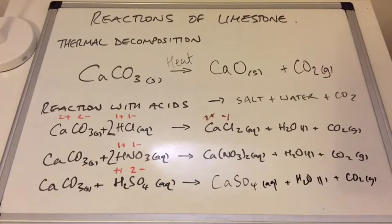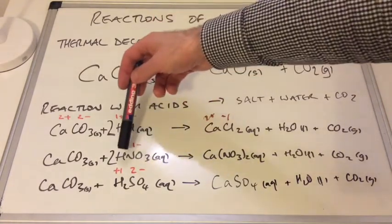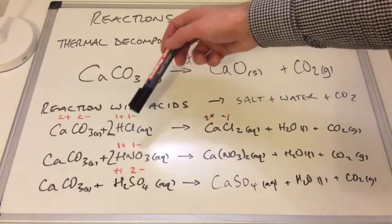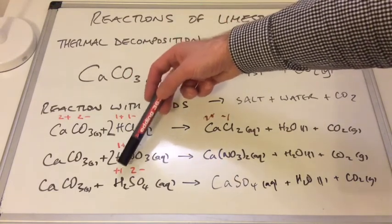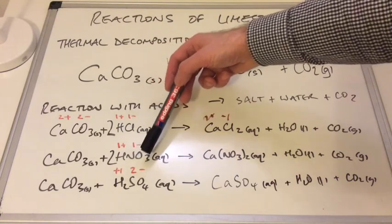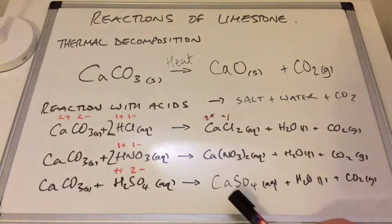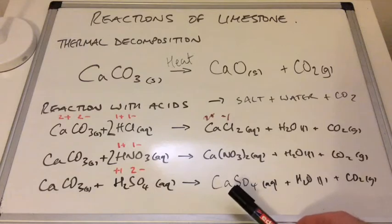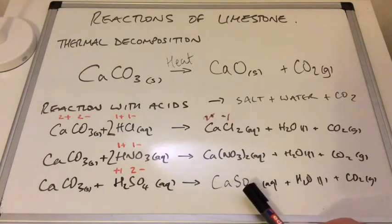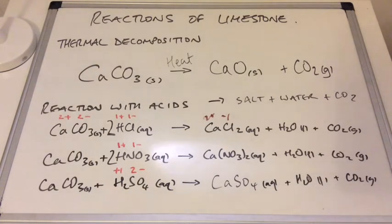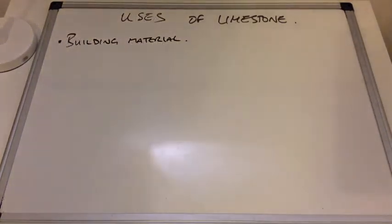For the final equation with sulfuric acid: the sulfate ion is SO₄²⁻. The acid formula H₂SO₄ reflects that we need two H⁺ for every SO₄²⁻. The salt produced is calcium sulfate. With charges of 2+ and 2−, one of each cancels the overall charge, so the formula is CaSO₄ — and this equation is already balanced.